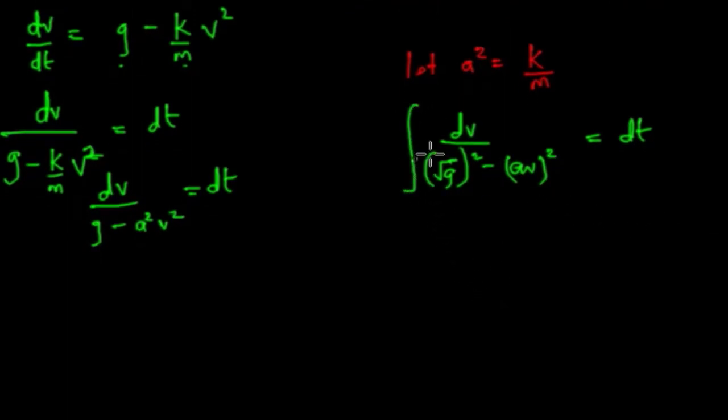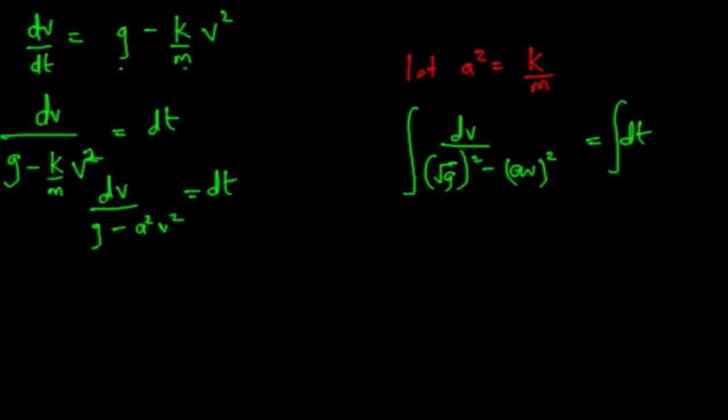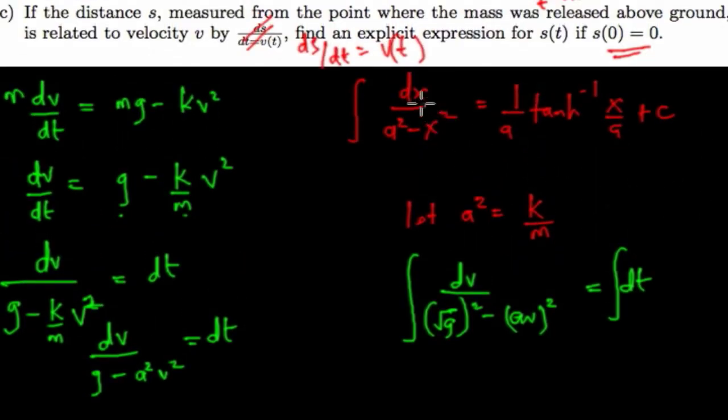Let's continue. Let's solve this. So we want to integrate both sides. We'll recall that we said dv over a squared minus x squared equals 1 over a, hyperbolic tangent inverse of x over a. So here it's going to be 1 all over, so this is my a here, 1 over root g.